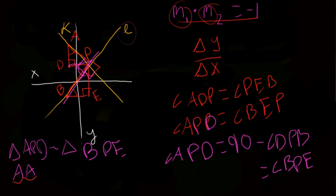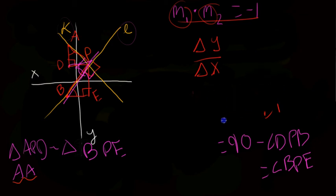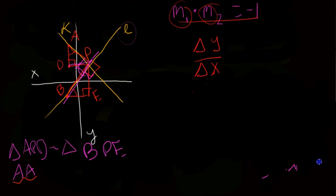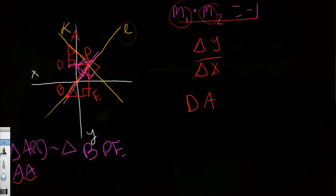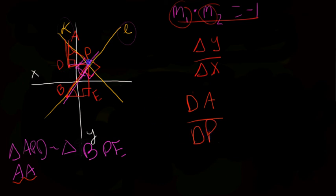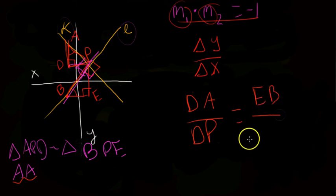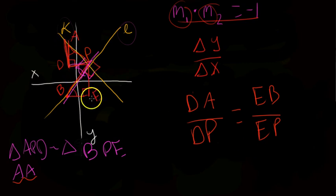Now we can set up our ratios. Using corresponding parts of similar triangles: DA over DP is equivalent to EB over EP. DA is the change in Y, EB is the change in X — same relationship. EP is change in Y, DP is change in X. And we want to prove M1 times M2 equals negative 1.